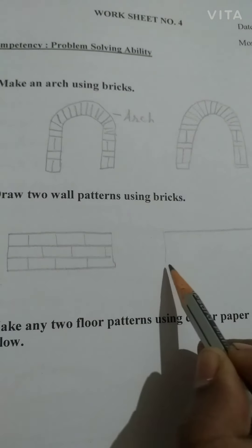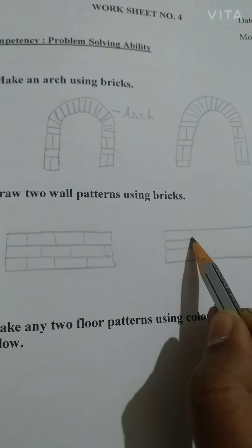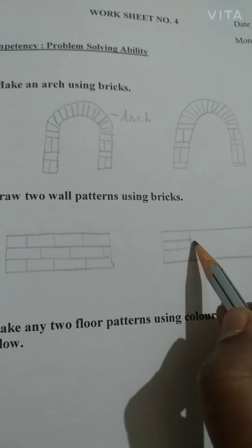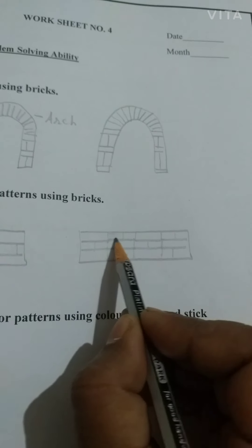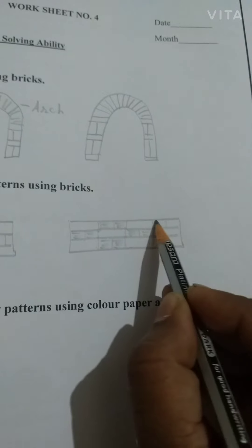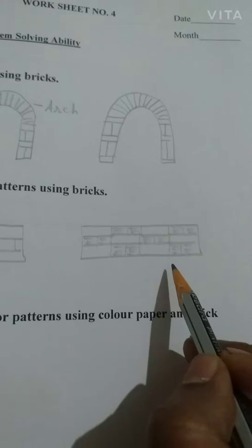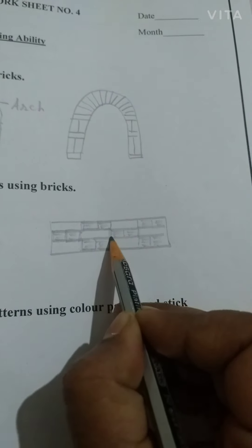Then you can make any other wall pattern — one more. Whatever you like, it can be like this: one brick, then maybe two small bricks, then again one brick, then two small bricks on top, one brick down. You can complete your pattern. You can color it too — I'm just shading so you can see the design. Here I'm using two bricks together and one brick in between.